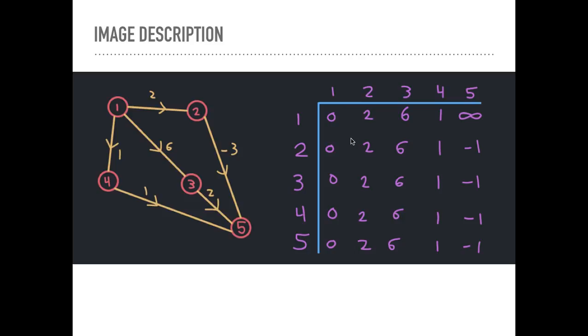This will be how the algorithm runs. We'll start at one because we do this in topological order. So the distance from one to one is zero, the distance from one to two is two, distance from one to three is six, distance from one to four is one, and from one to five, one doesn't reach five, so we still have this default value of positive infinity that we assigned earlier.